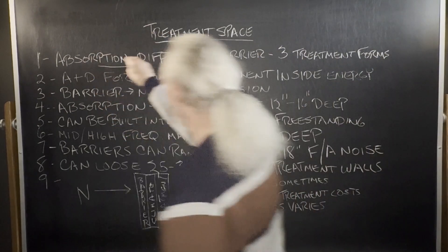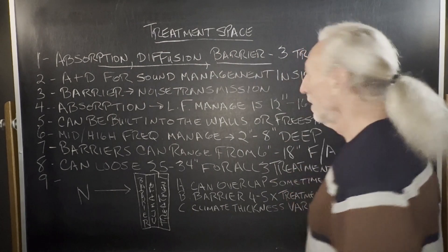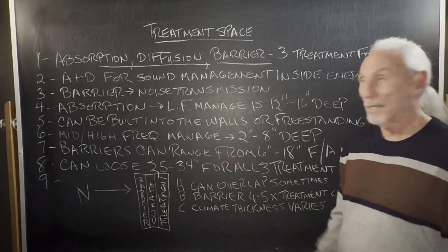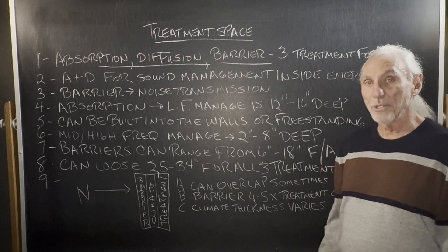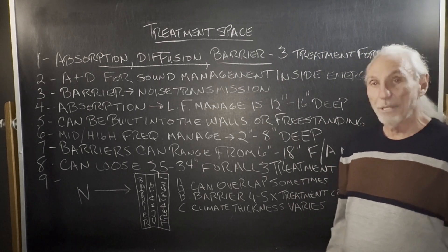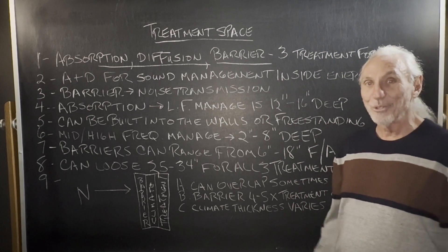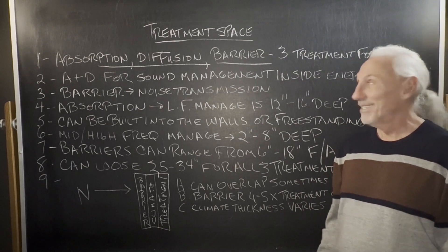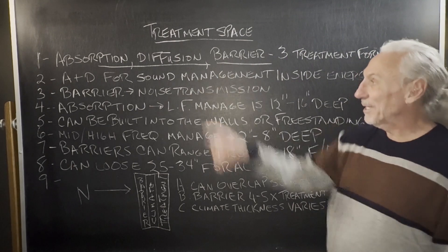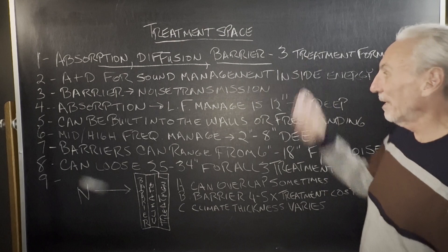What do we have for treatment? We have absorption, diffusion, and barrier. There's really three kinds of treatment because barrier is noise transmission. You can have the best treated room in the world, but if it's too noisy, what good is it? So there's really three types of treatment that we have to look at.